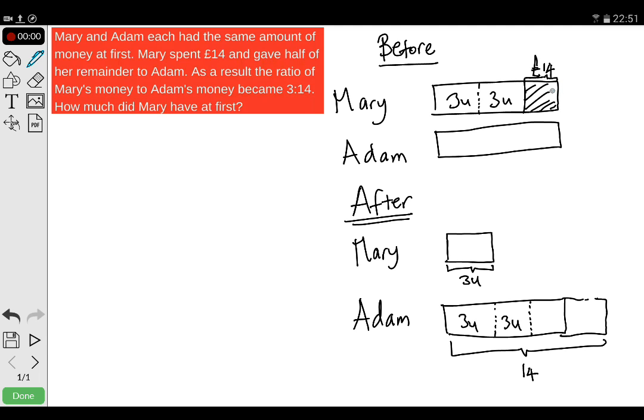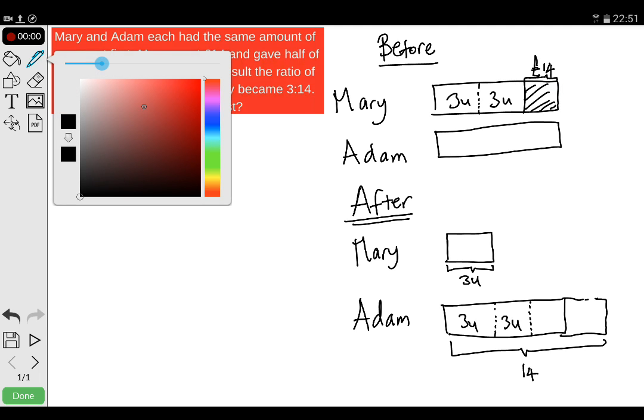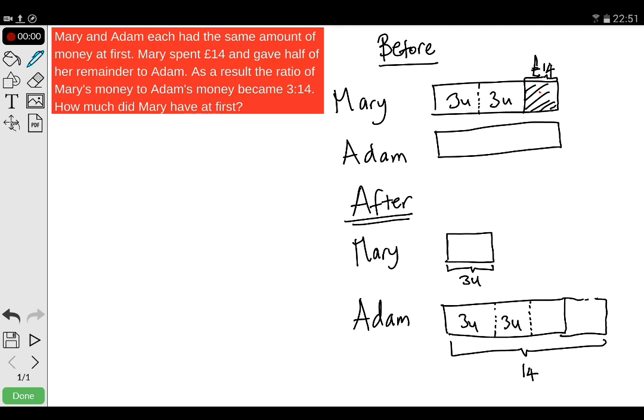This 14 pounds, this section that represents 14 pounds which is here, would actually be here as well. That's 14 pounds. That hasn't changed. That would have been the whole amount that Adam had previously, and so did Mary. But then Mary decides to spend 14 pounds and give half her remainder away. The half of the remainder she gave away, which was here, has gone there. That's 3 units, and that would have also been 3 units.